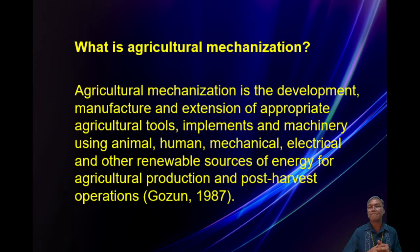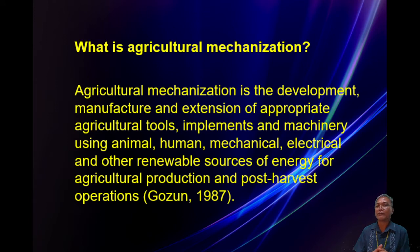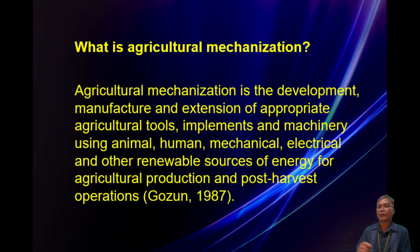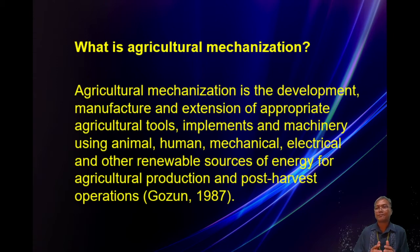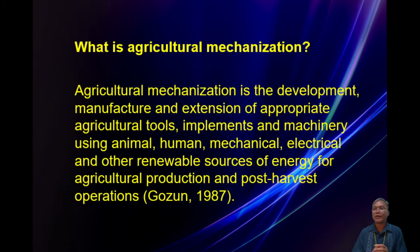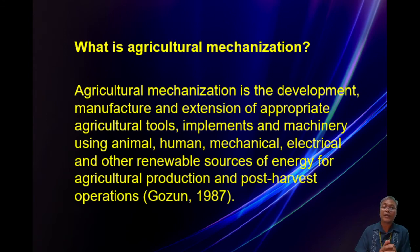If you really look at this definition, it's really very broad. Let's take it one by one. When we say mechanization, it talks about machine development. Development starts with conceptualization, then you have your plan, your drawing, your design, and then you have to fabricate. After fabrication, you have to test and evaluate the machine. Once the machine is working, that's the time you are going to manufacture. Manufacture is the process of reproducing the prototype into several hundreds of units.